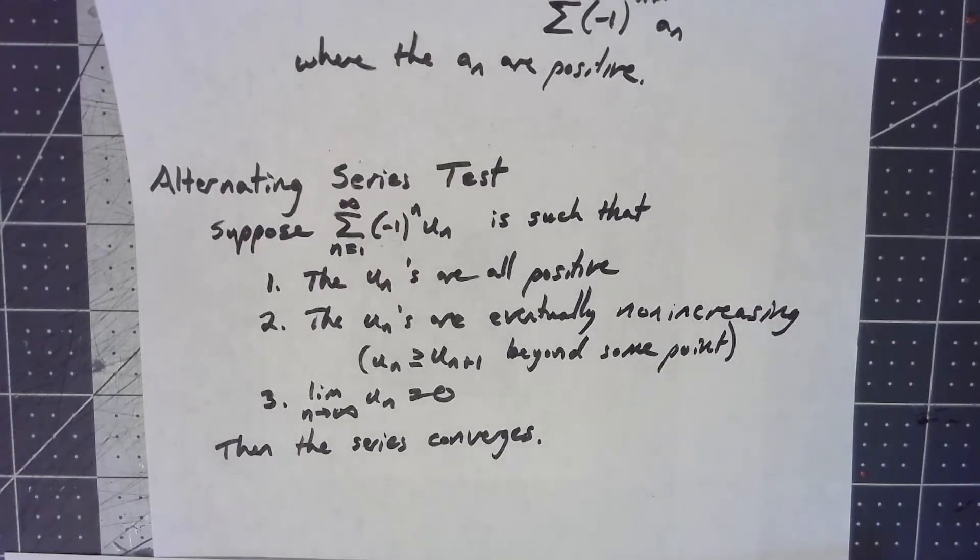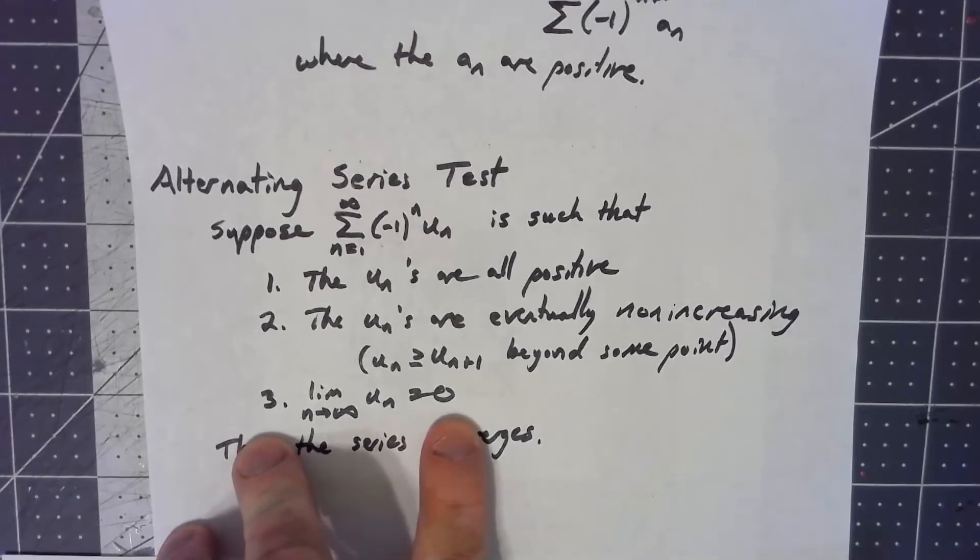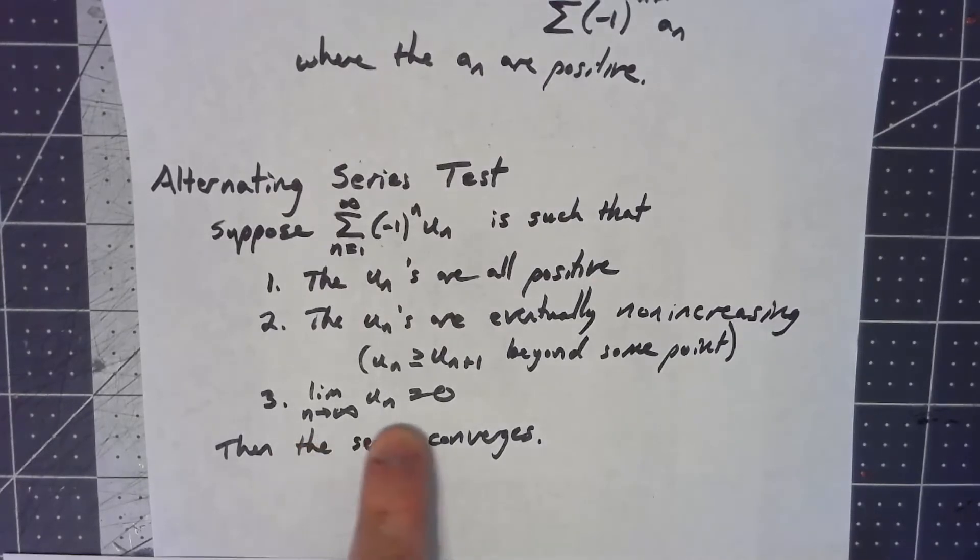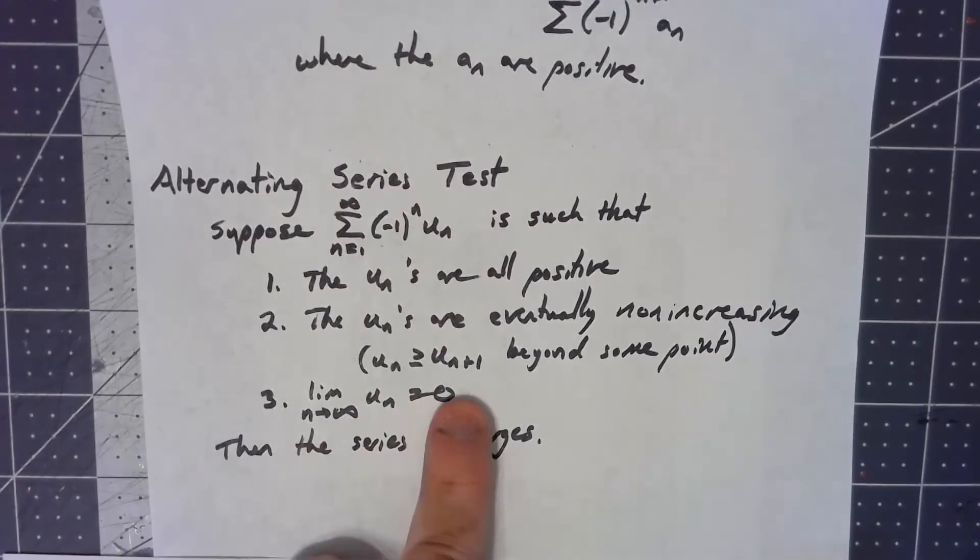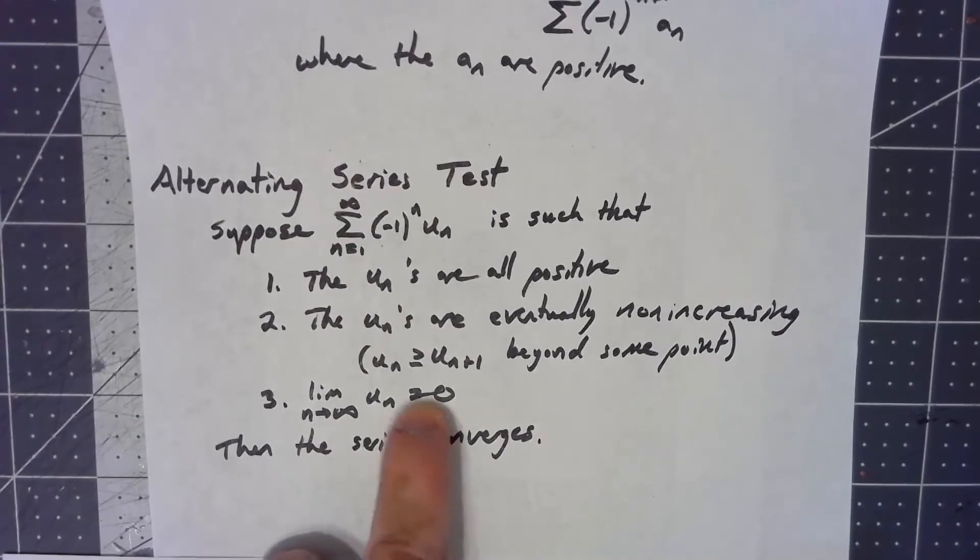The way I like to think about this is that if there's any chance of an alternating series converging, it does. Because we know if this last part isn't true, by the divergence test, the series diverges. And the other thing is this middle part is pretty much, not 100%, but pretty much, if this bottom thing, part three holds, number two is pretty much going to happen.